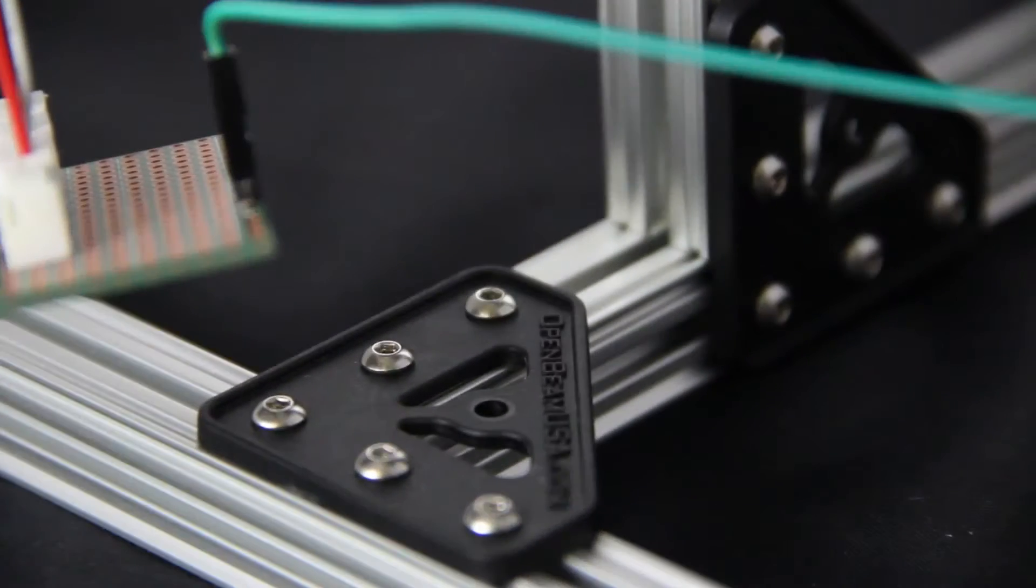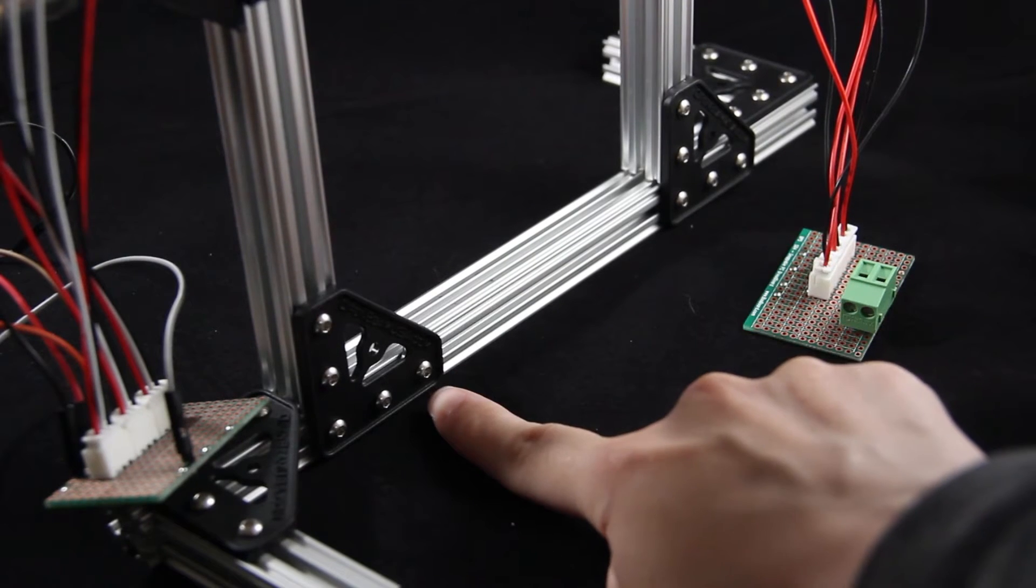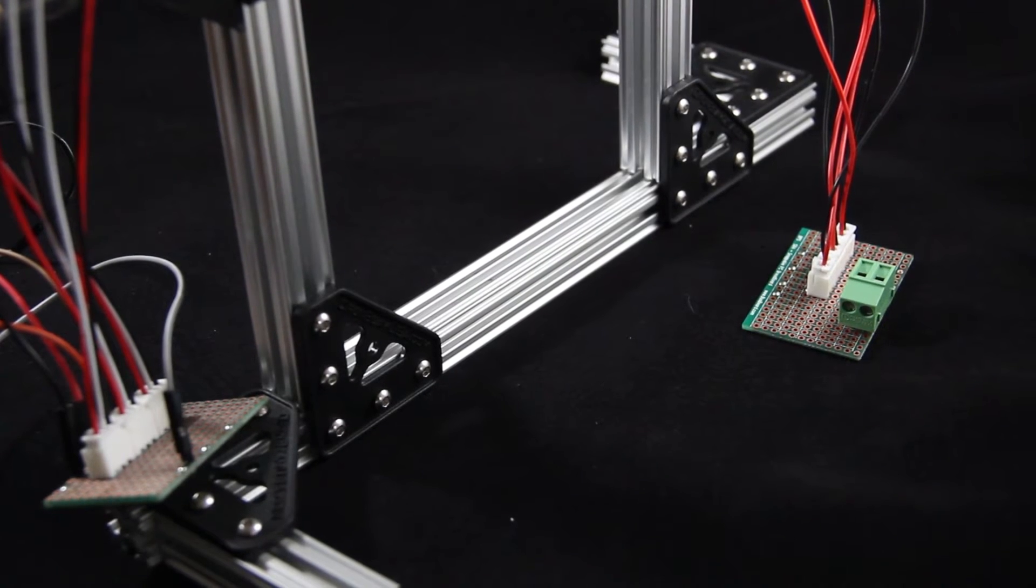We used OpenBeam for our structure. It's sturdy, adjustable, and we already had the parts laying around in our lab. This allowed us to move the sensors towards and away from each other.